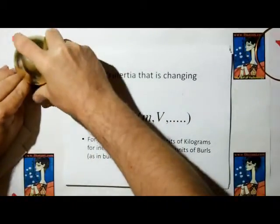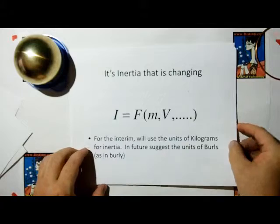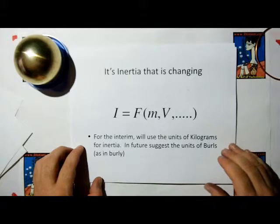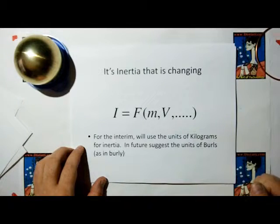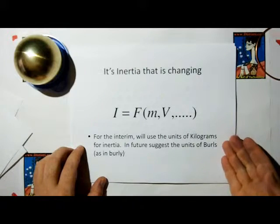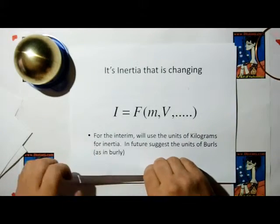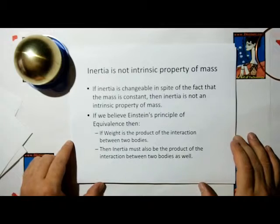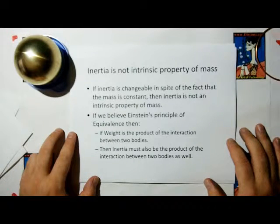So what we need to do is define inertia as separate from mass. Inertia is going to be a function of mass, velocity, and other properties we'll discuss in later videos. We're going to still use the units of inertia to be kilograms, even though we really should change it to something else — I propose a unit of burls, as in Burley — but we'll stick with kilograms for now to avoid confusion. So what do we learn from this? Inertia is changeable in spite of the fact that mass is constant. If that's the case, then inertia is not an intrinsic property of mass.